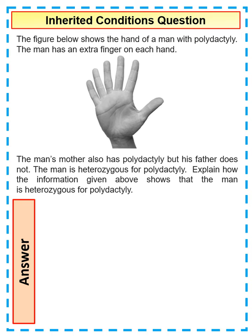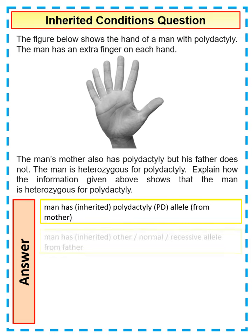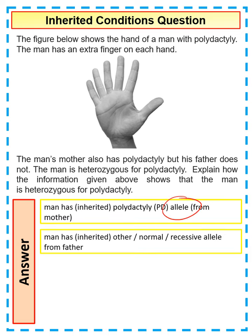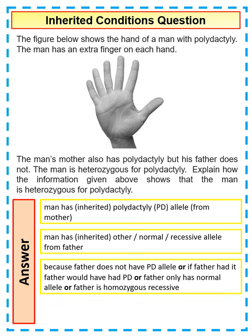There are a few key things we can talk about. The man has inherited the polydactyly allele from his mother. He must have inherited a normal allele from his father because his father didn't have it. Since the father does not have the polydactyly allele, the father must be homozygous recessive.